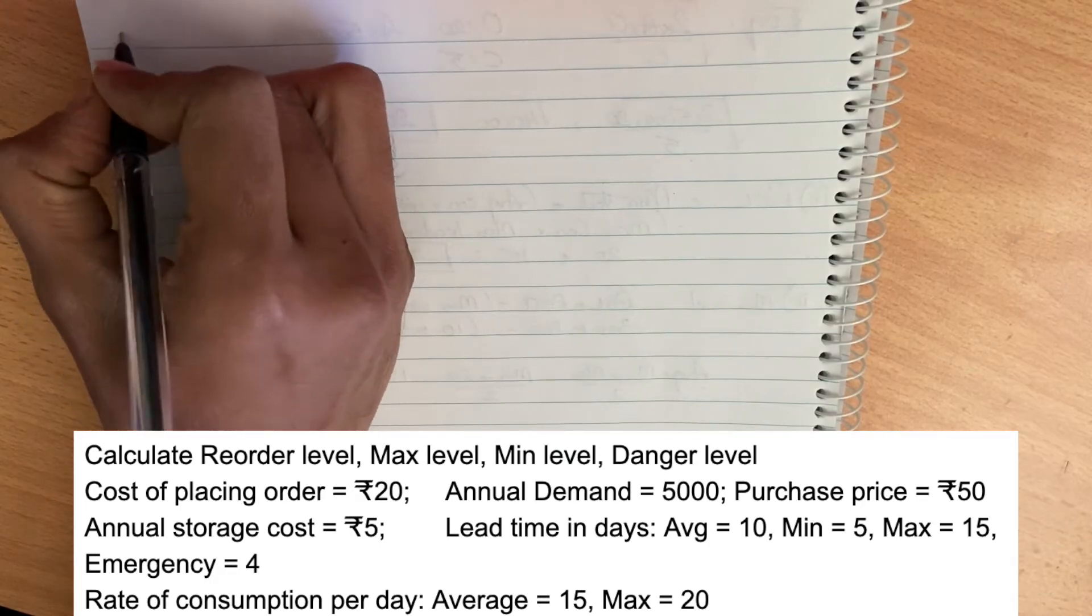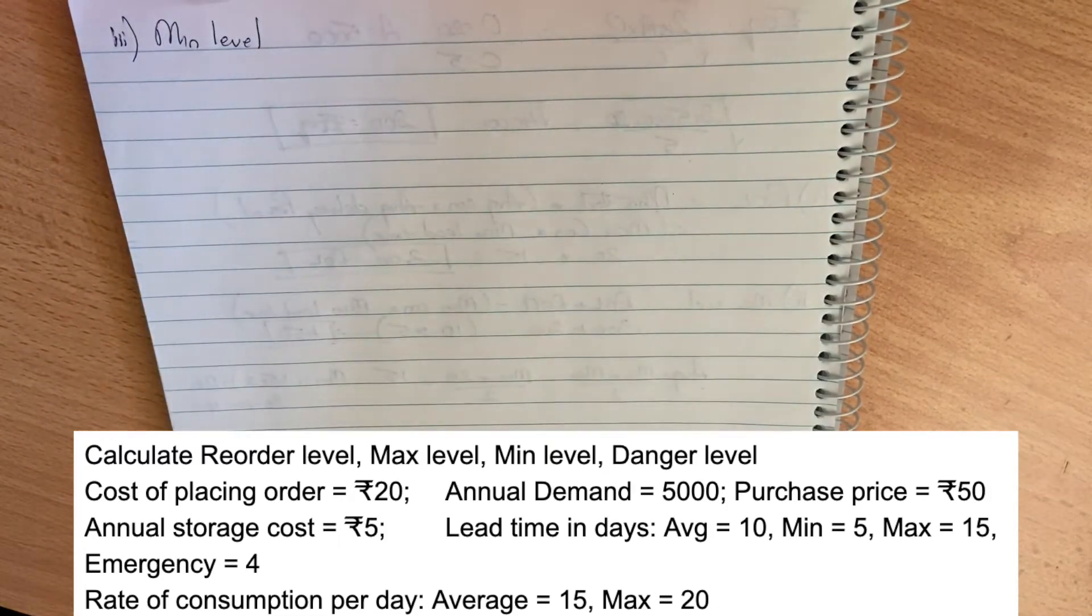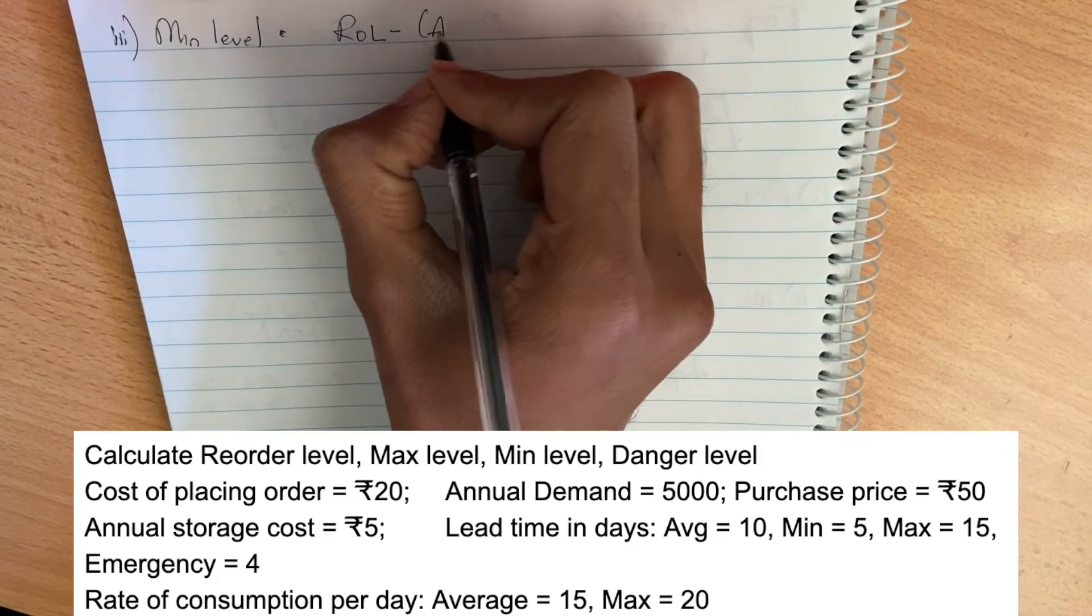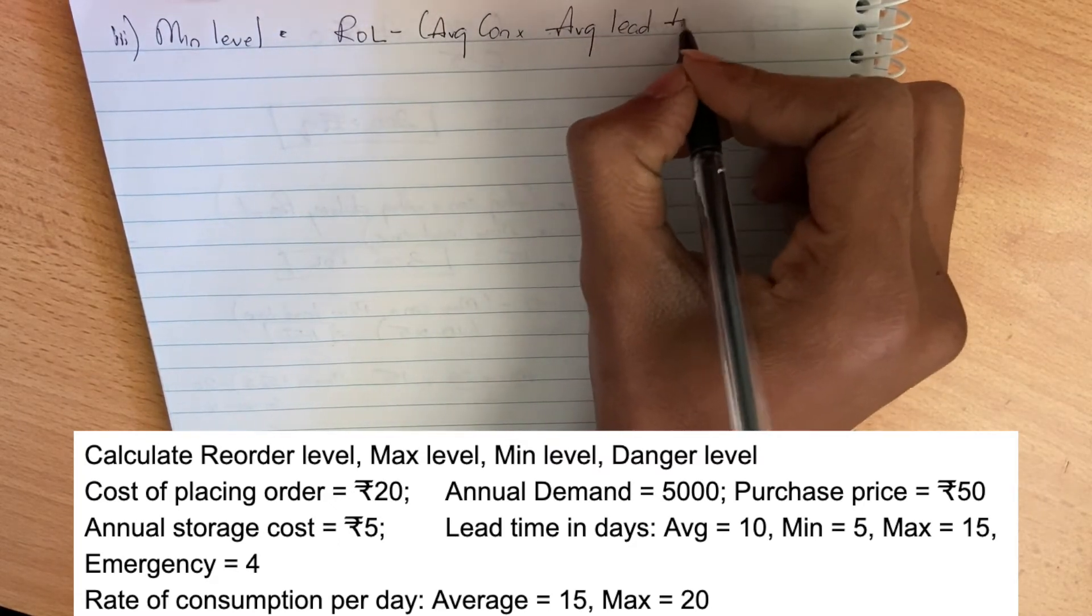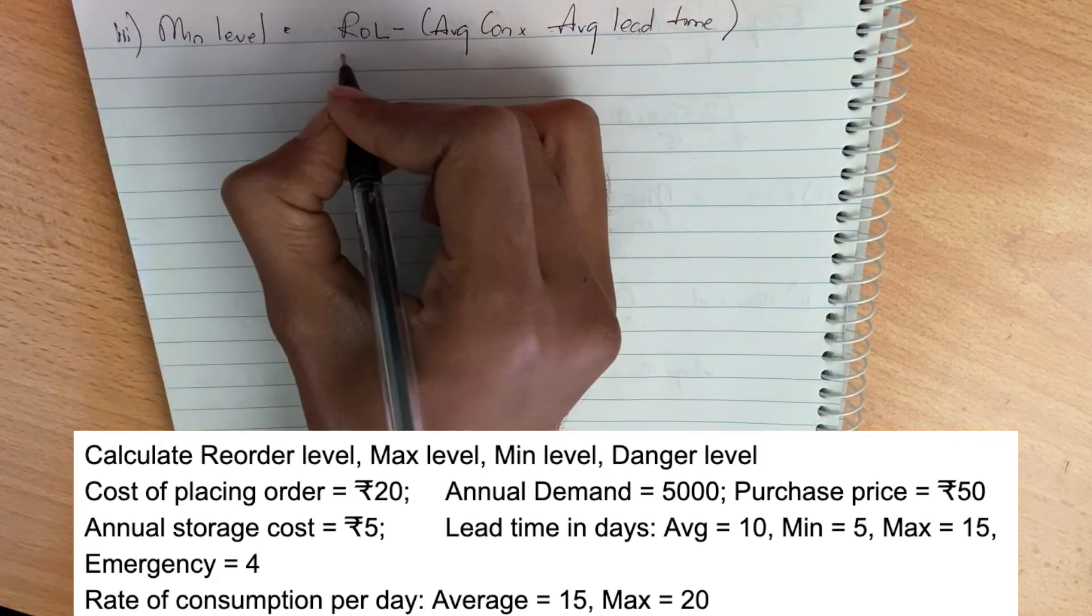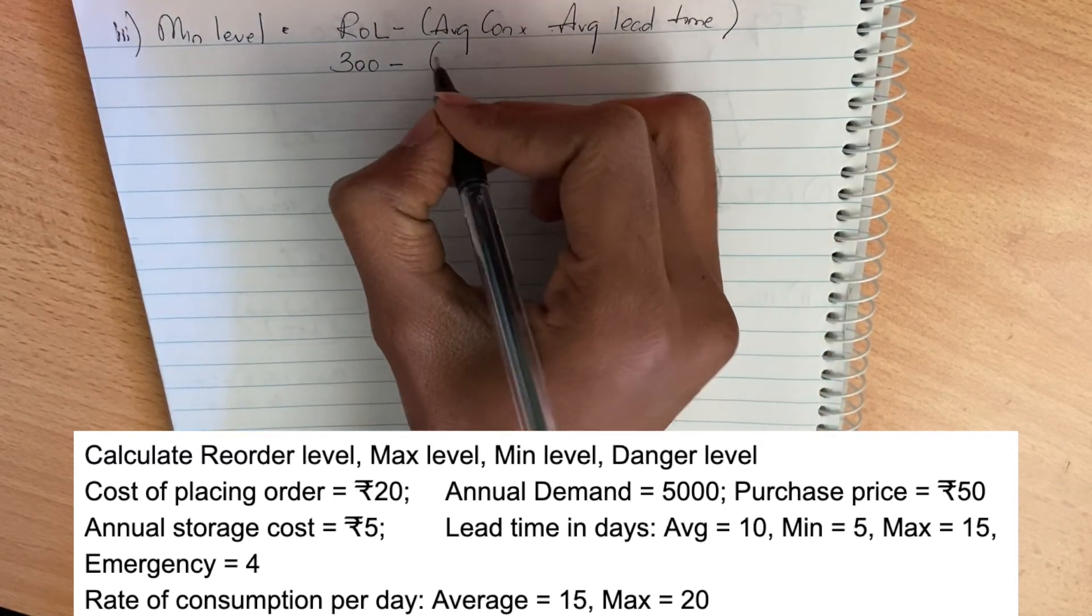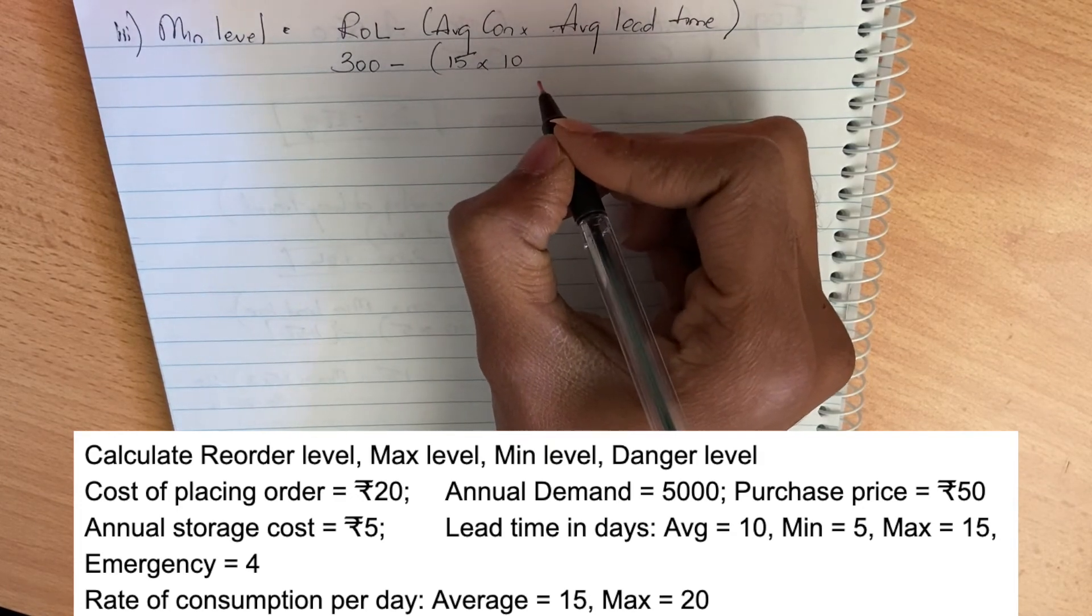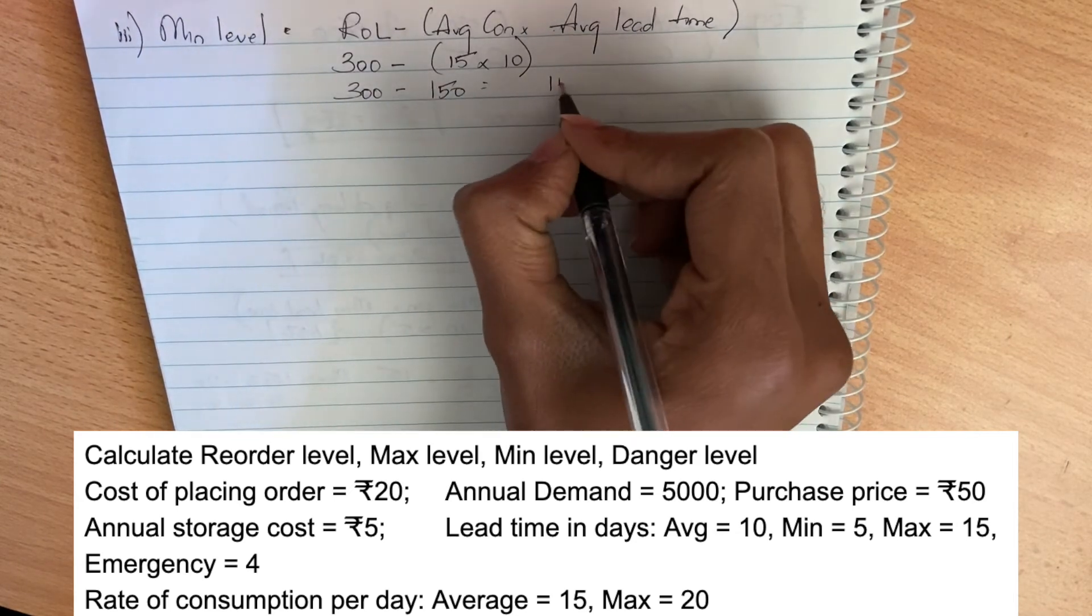Next is minimum level. The minimum level formula is reorder level minus average consumption into average lead time. Average consumption is 15 units per day and average lead time is 10 days, so 300 minus 150. So 150 is the minimum level.